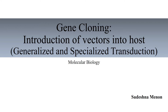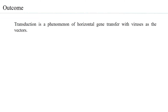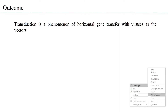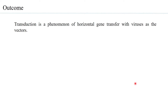Let us look at the learning outcomes of the session. Transduction is a phenomenon of horizontal gene transfer with viruses as the vectors. It could be a lambda bacteriophage, it could be an M13 phage, it could be SV40 for an animal cell, or it could be a caulimovirus for plants. Basically, viruses are commonly used biological vectors for gene cloning.